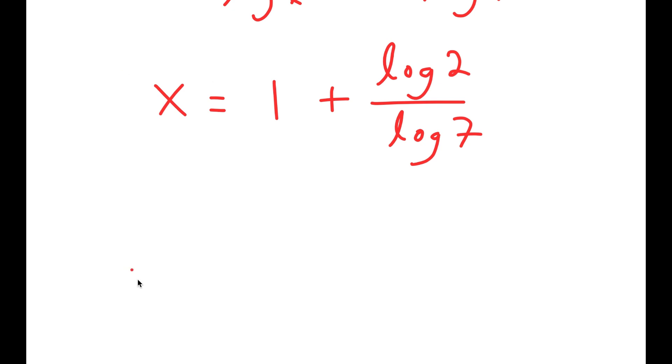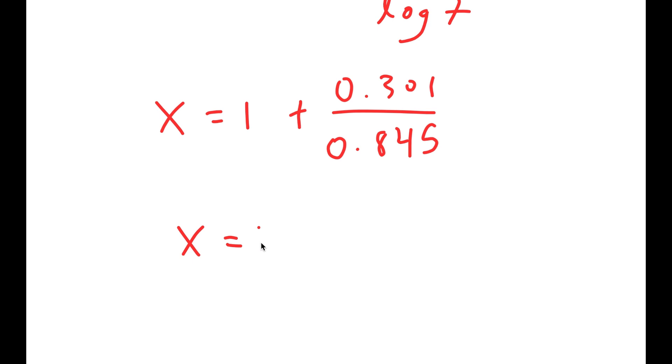So I get x is equal to 1 plus 0.301 over 0.845, which is equal to 1 plus 0.356, which is equal to 1.356.